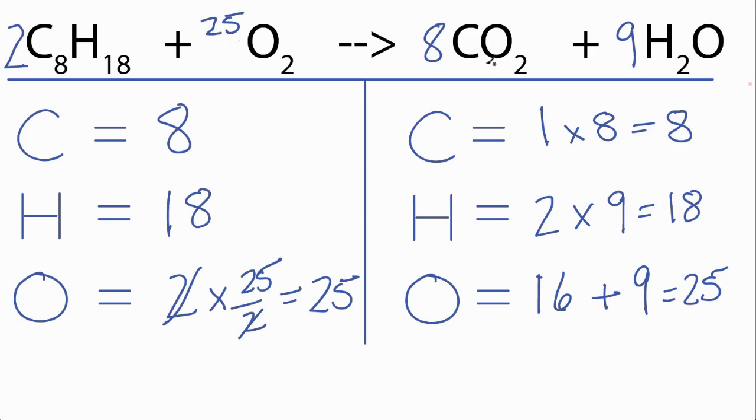2 times 8, that is 16. And 2 times 9, that would give us 18. So at this point, we have a balanced equation, and the coefficients are 2, 25, 16, and 18.